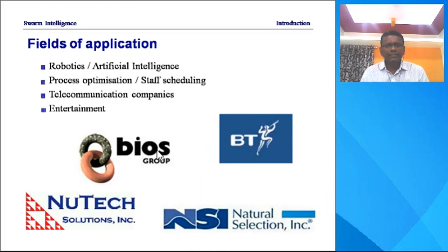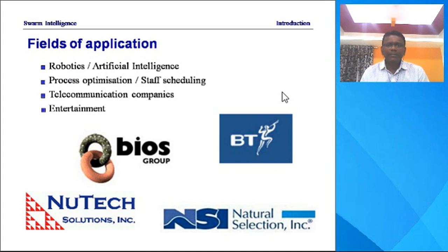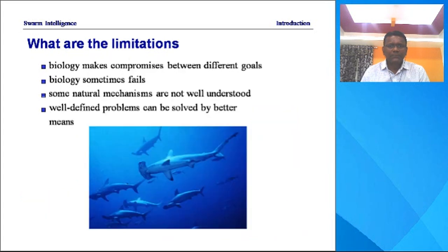Now you can see where these things are useful — the fields of application include robotics, artificial intelligence, process optimization, staff scheduling, telecommunication companies, and entertainment. These are some of the applications listed here, but the list is very big where Swarm Intelligence and evolutionary systems are useful.